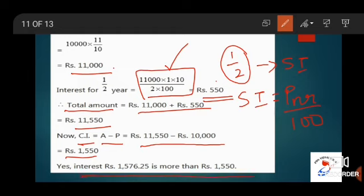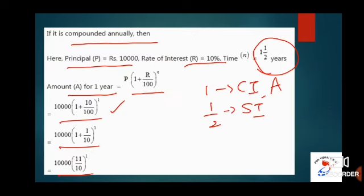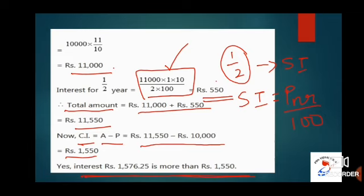To conclude: Rs. 1,576.25 is more than Rs. 1,550. That is, the compound interest for half yearly (Rs. 1,576.25) is more than the compound interest for annually (Rs. 1,550).